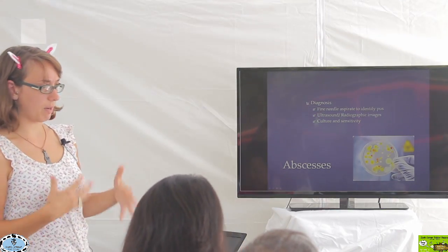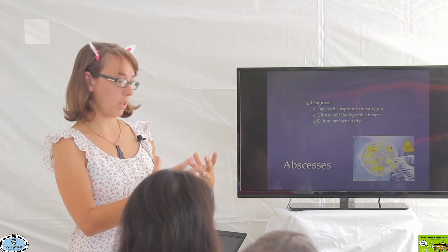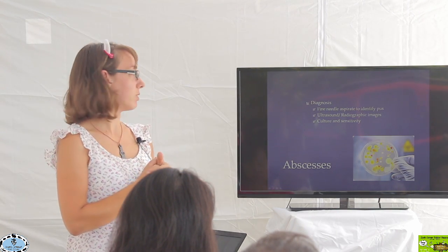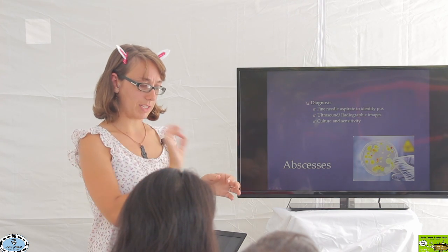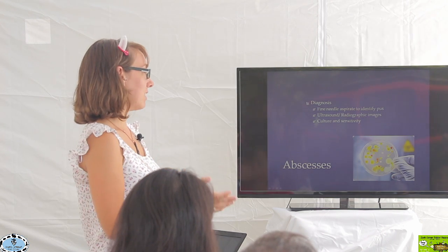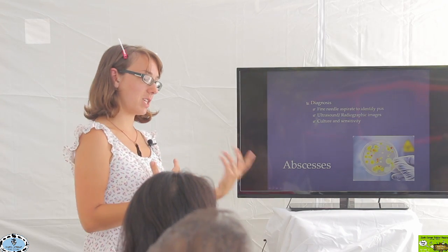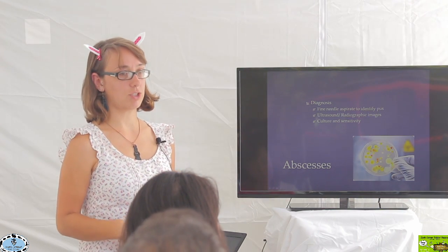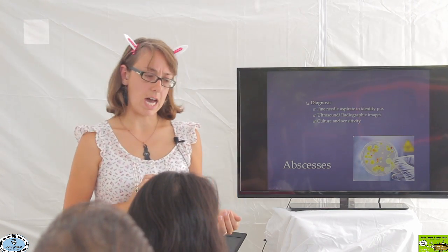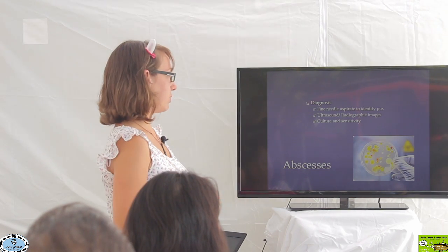For diagnosis, if we see a swollen area, we can put a little needle in and aspirate some of the content out — this is called a fine needle aspirate. If you stick a needle in, suck some content out, and you have pus in the syringe, that's an abscess. That can be very straightforward. For less common locations like within the chest or gastrointestinal tract, those are more difficult to identify and require more involved diagnostic tests such as x-rays and ultrasounds.